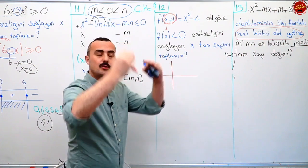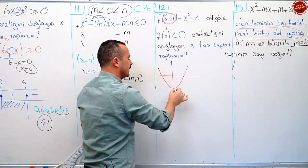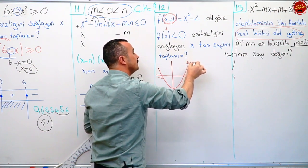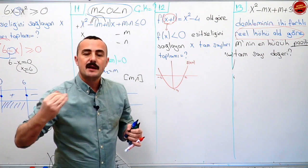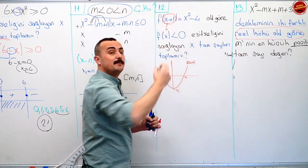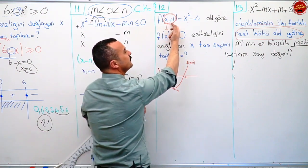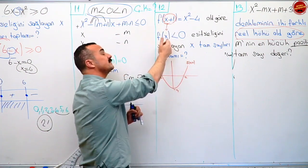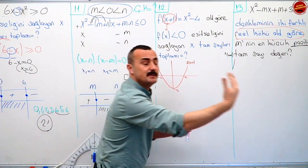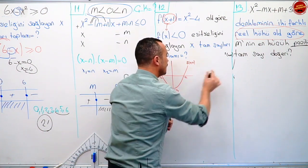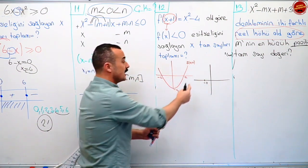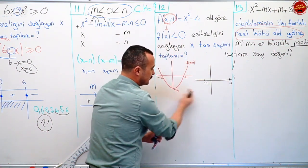x kare eksi dört eşittir, x karenin dört birim aşağı inmiş hali. Şöyle bir parabol. Eksi dört. Sıfır yapan değerler: biri eksi iki, biri iki. Fx artı birin grafiği bu. Şimdi Fx artı birin grafiğinden Fx'in grafiğine geçeceğiz. Fx'den Fx artı bire geçerken ötelemelerimiz vardı. Artı bir yapıldıysa grafik bir birim sola kaymış. Yani bu grafik Fx'in sola kaymış hali. Bundan Fx'e geçmek için eksi bir yapmam lazım, grafik bir birim sağa kayacak.